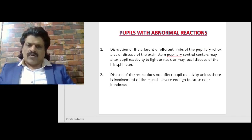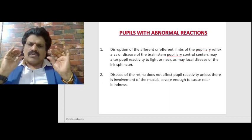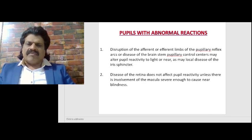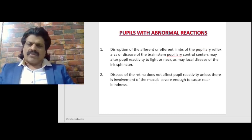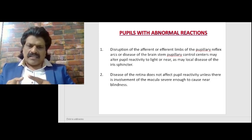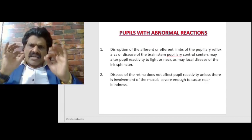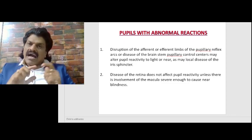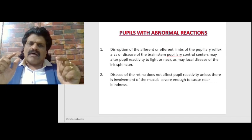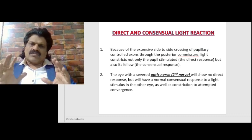Disruption of the afferent — that means the second nerve — or the efferent limbs — that means the third nerve — of the pupillary reflex arcs, or disease of the brainstem pupillary control centers, may alter pupillary reactivity to light or near. Local disease of the iris sphincter can also be involved. Diseases of the retina do not affect pupil reactivity unless there is involvement of the macula severe enough to cause near blindness.